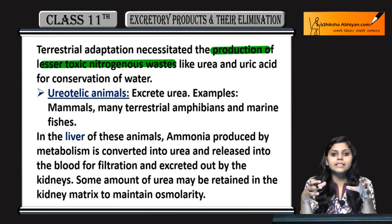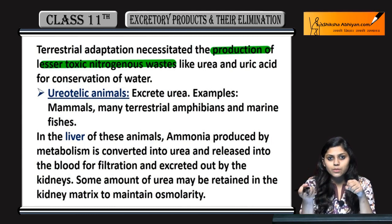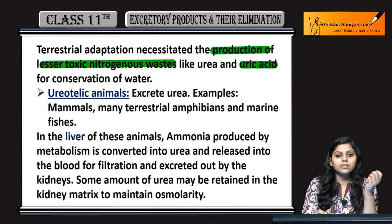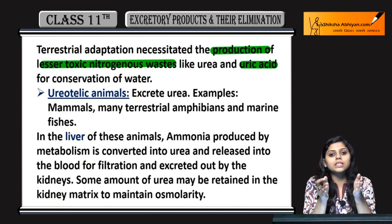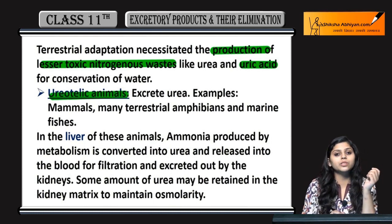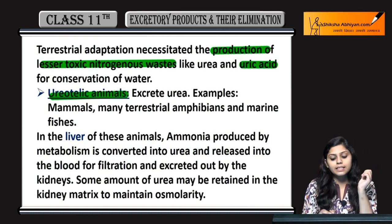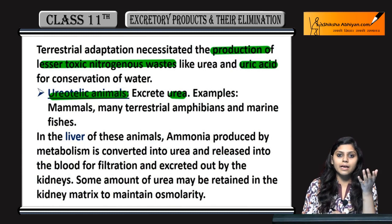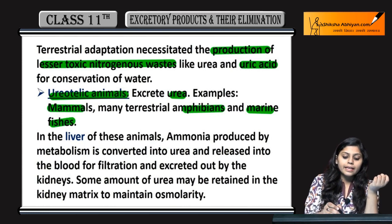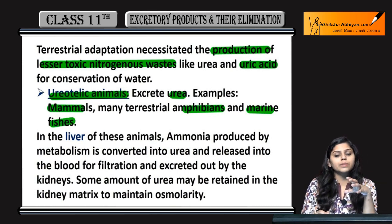Terrestrial adaptations have necessitated the production of lesser toxic nitrogenous waste. Terrestrial animals mein less toxic nitrogenous waste produce hota hai, like urea and uric acid, taaki water ki conservation rahe. Ureotelic animals excrete urea — examples are mammals, many terrestrial amphibians, and marine fishes.